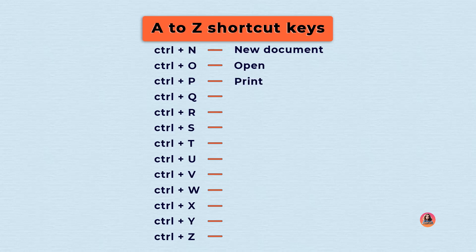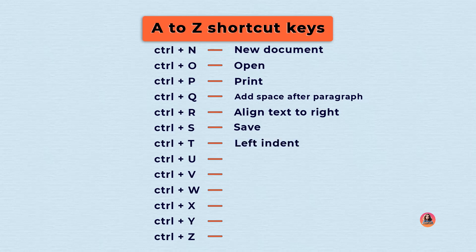Control plus Q: add space after paragraph. Control plus R: align text to right. Control plus S: save. Control plus T: left indent.